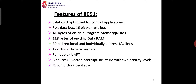We came to know that 8051, from that classification, is an 8-bit microcontroller, meaning it can handle 8 bits of information at a time. Therefore the 8-bit CPU is optimized for control applications. It has an 8-bit data bus, 16-bit address bus, 4 kilobytes of on-chip program memory (ROM), 128 bytes of on-chip data RAM, 32 bi-directional individual I/O lines, two 16-bit timer/counters, and full duplex UART.